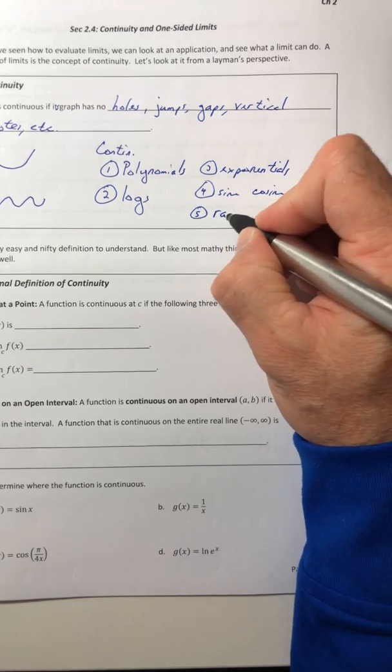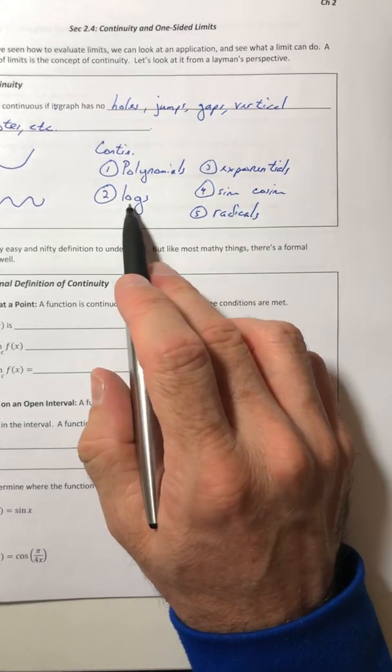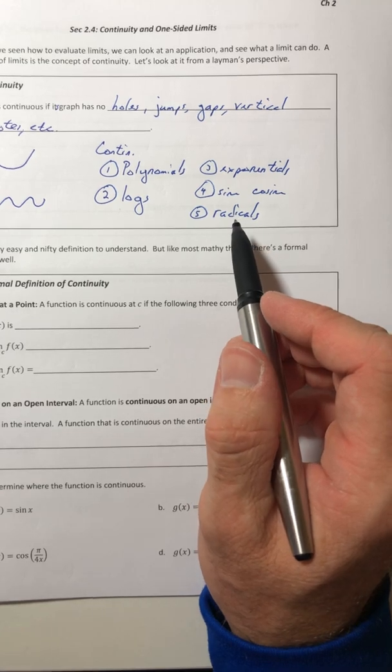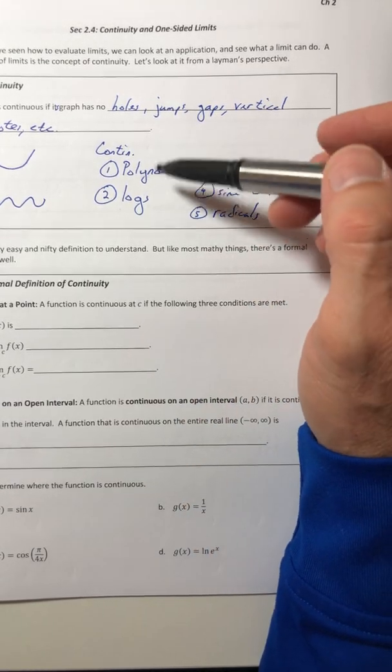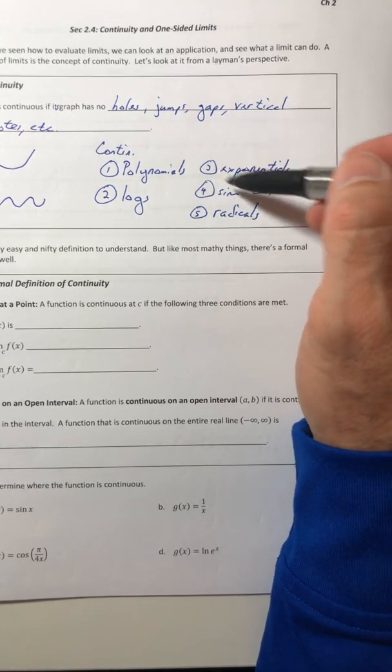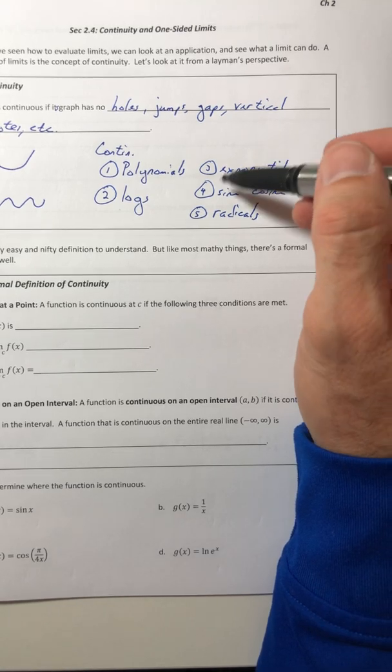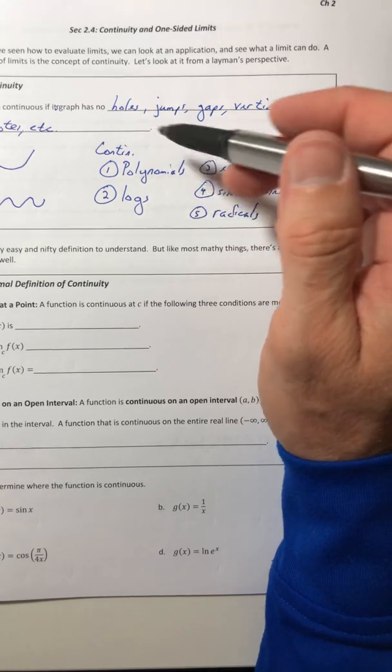Radicals in general are also continuous. Again, they have a restricted domain like the logs, but their curves don't have anything that breaks it up in the middle. We're not getting too crazy with these. It's just like the parent functions and the translations and transformations of them.